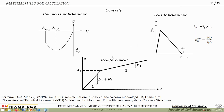For reinforcement, we used the Von Mises model — essentially a bilinear curve with hardening. You define the Young's modulus, the yield stress, the ultimate stress, and the corresponding deformations to form this curve. We decided this was close enough to what we wanted to achieve.